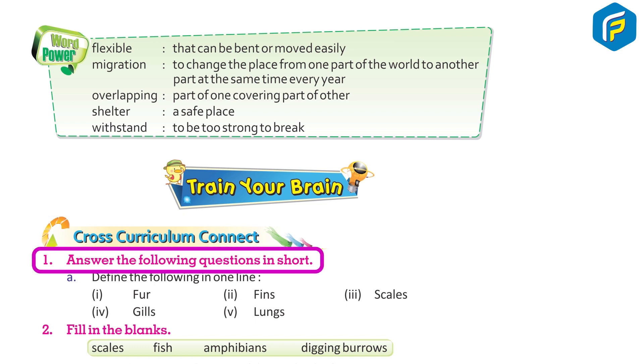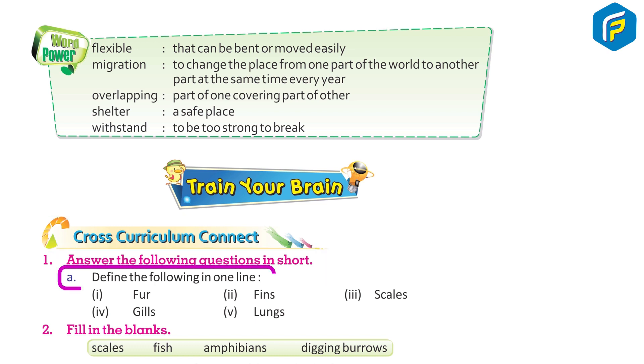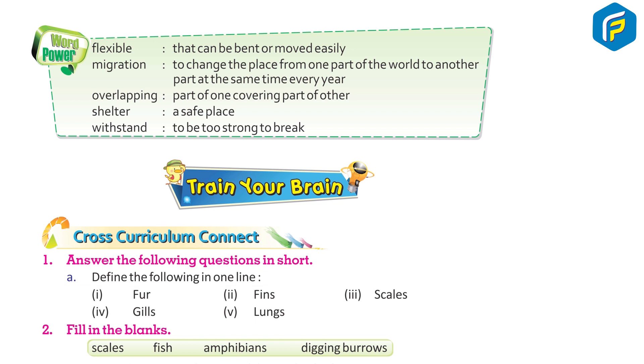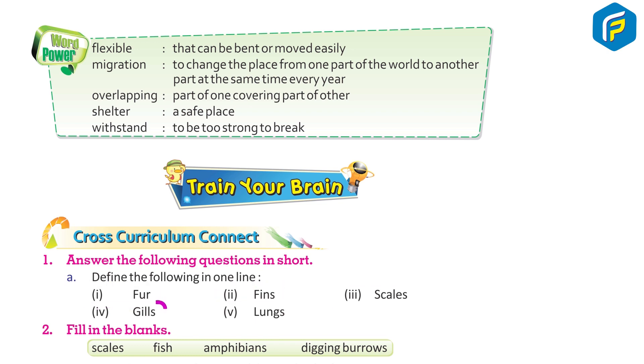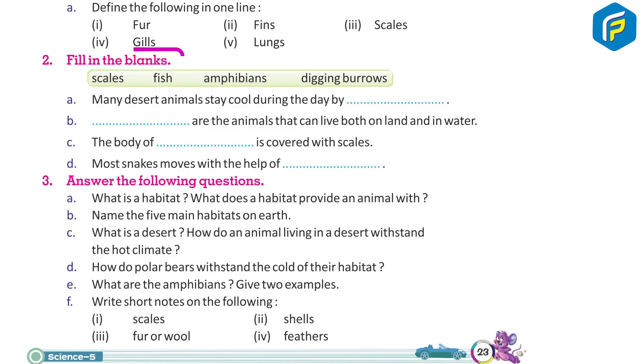Answer the following questions in short. Define the following in one line: 1. Fur, 2. Fins, 3. Scales, 4. Gills, 5. Lungs.